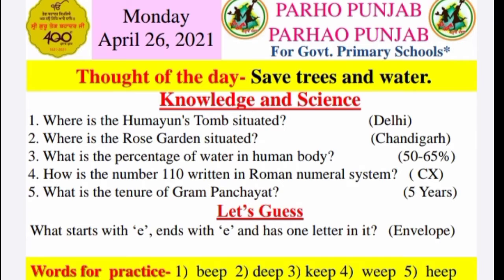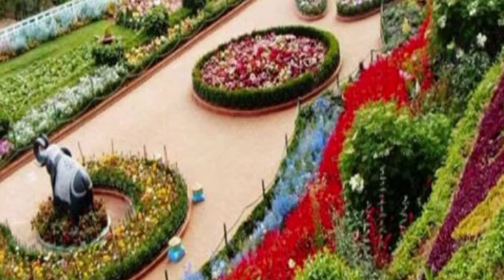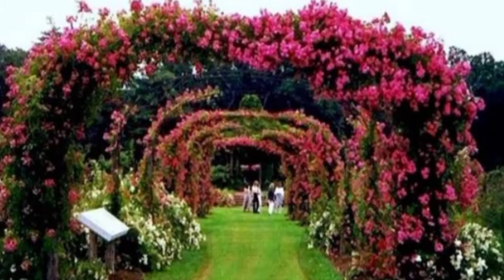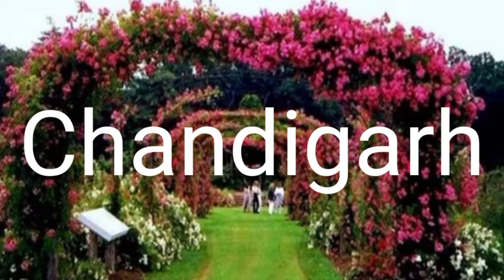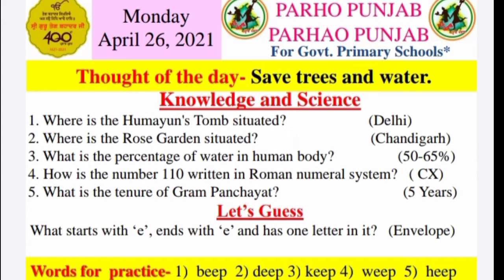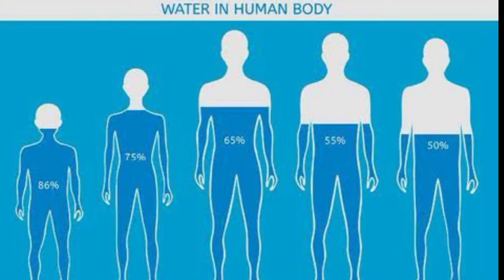The second question is: where is the rose garden situated? Rose garden kithe sthit hai? And the answer is Chandigarh. Eh Chandigarh vich sthit hai.